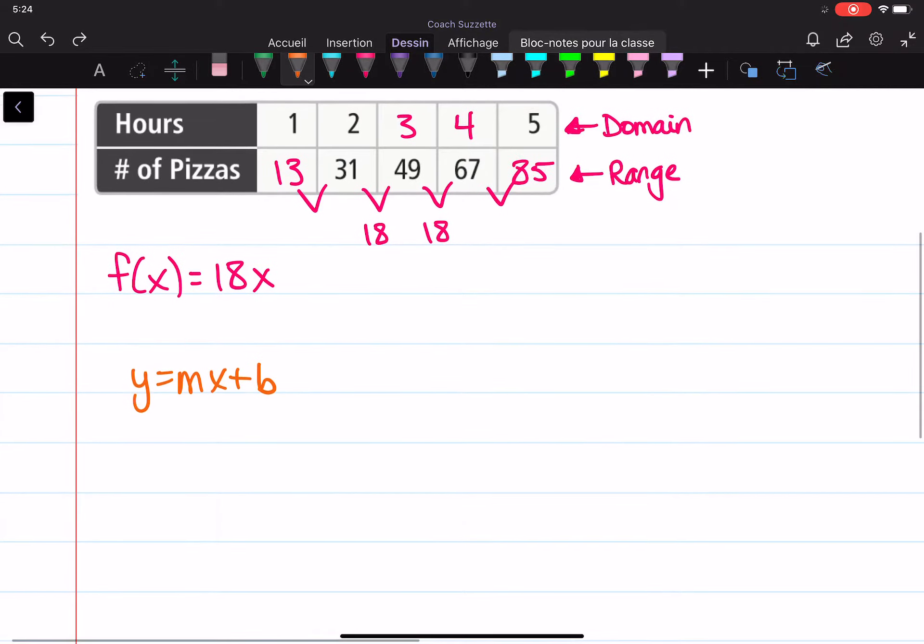Well, we can pick any point to plug in for our x comma y. So let's pick this one. So that means we have 13 is equal to 18 times 1 plus b. Minus 18 on both sides. The y-intercept is negative 5.